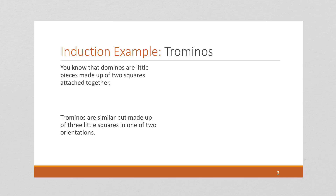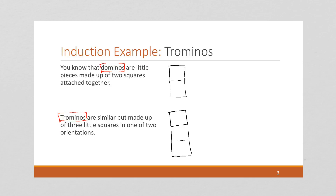Most people know about dominoes — we've talked about them a number of times in these videos. Dominoes are little game pieces made up of two squares. Trominos are similar, but trominos have three squares. They can be arranged in a straight line or in an L shape. This L-shaped tromino is what we're going to be working with today.